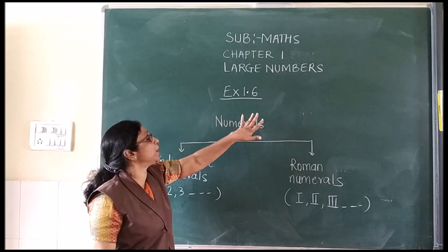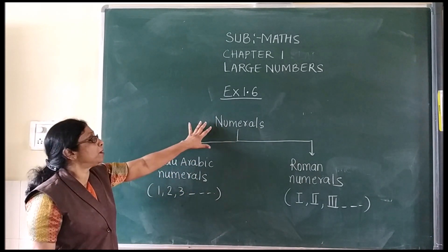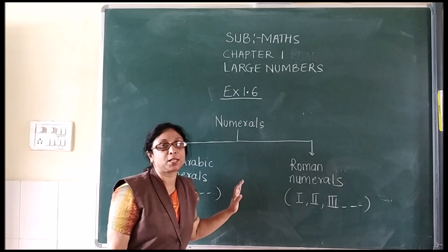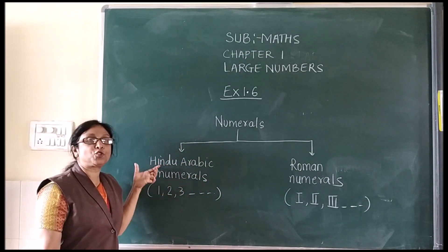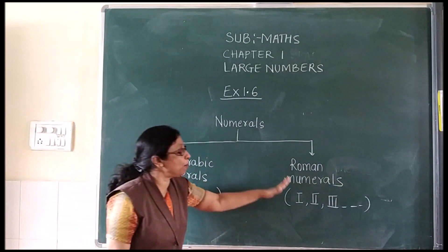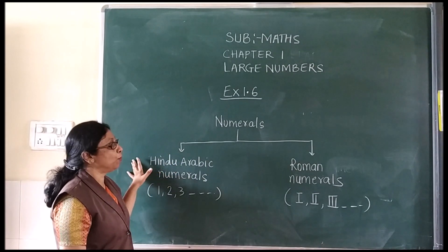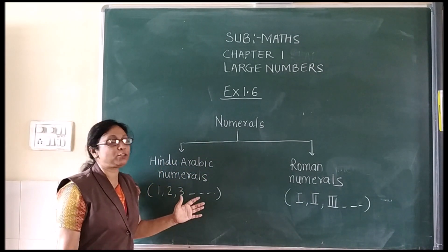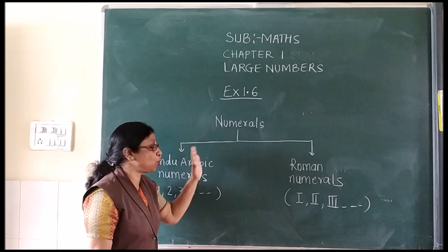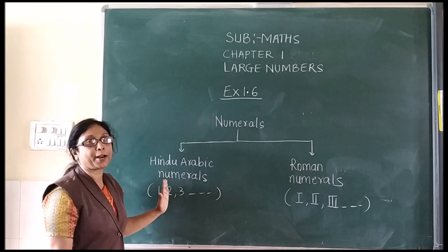Now we will see exercise 1.6 — digit numerals. This exercise is based on numerals. Numerals are of 2 types: one is Hindu Arabic numerals, and the second is Roman numerals. Hindu Arabic numerals are the natural numbers that start from 1, 2, 3 and so on. Roman numerals are like i, ii — this is the Roman language. In this exercise you will learn how to convert Hindu Arabic numerals to Roman numerals and Roman numerals to Hindu Arabic numerals.